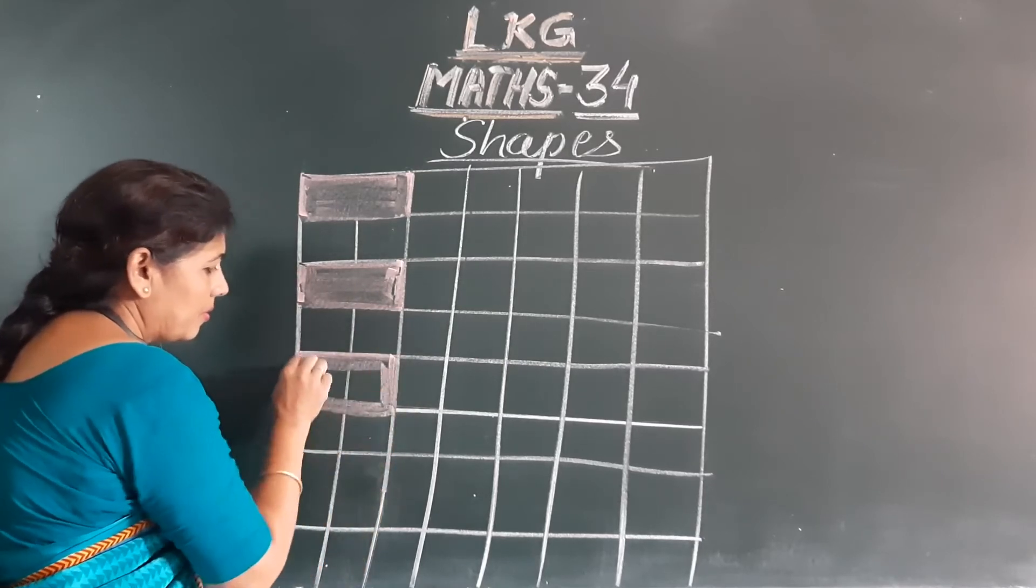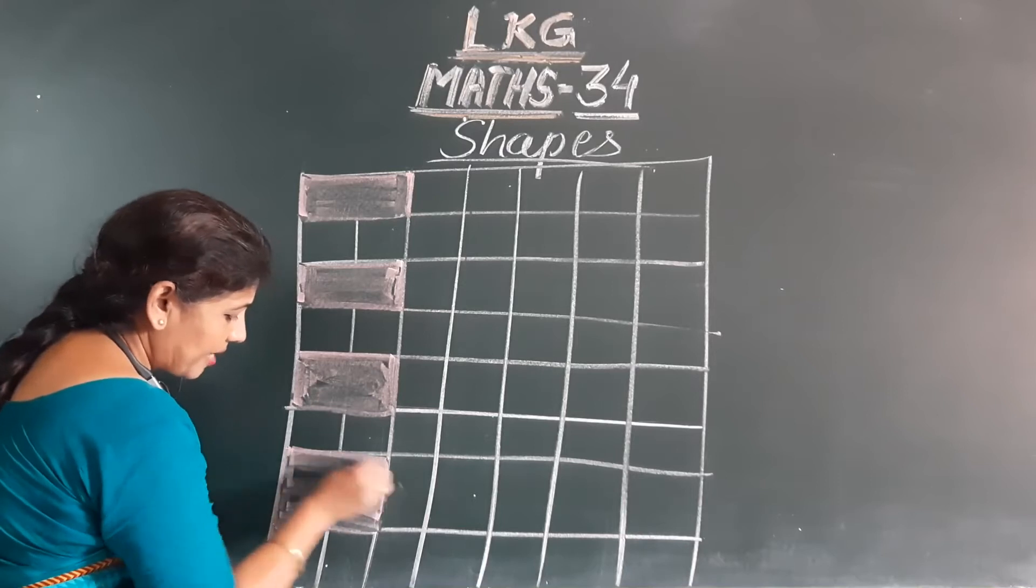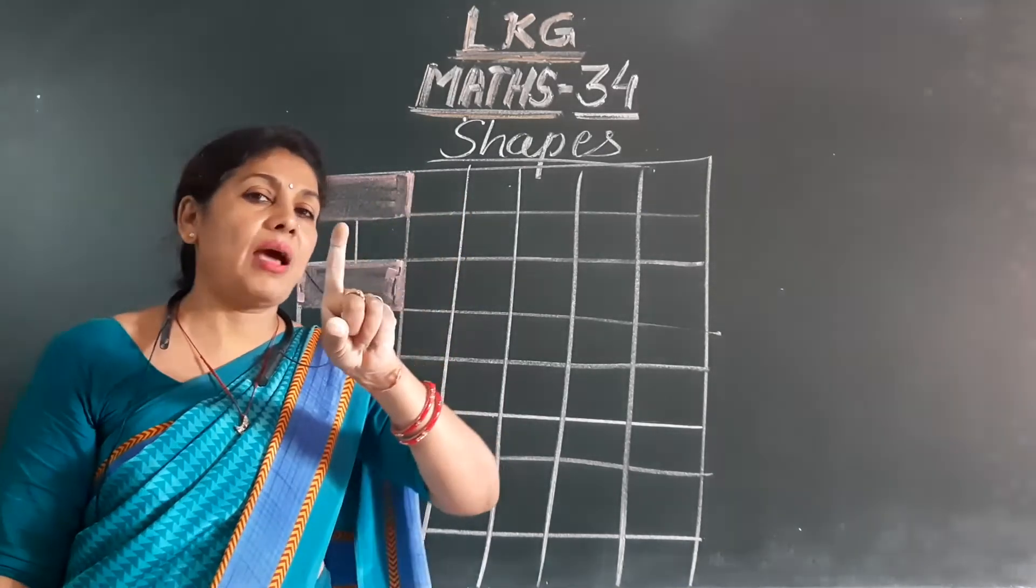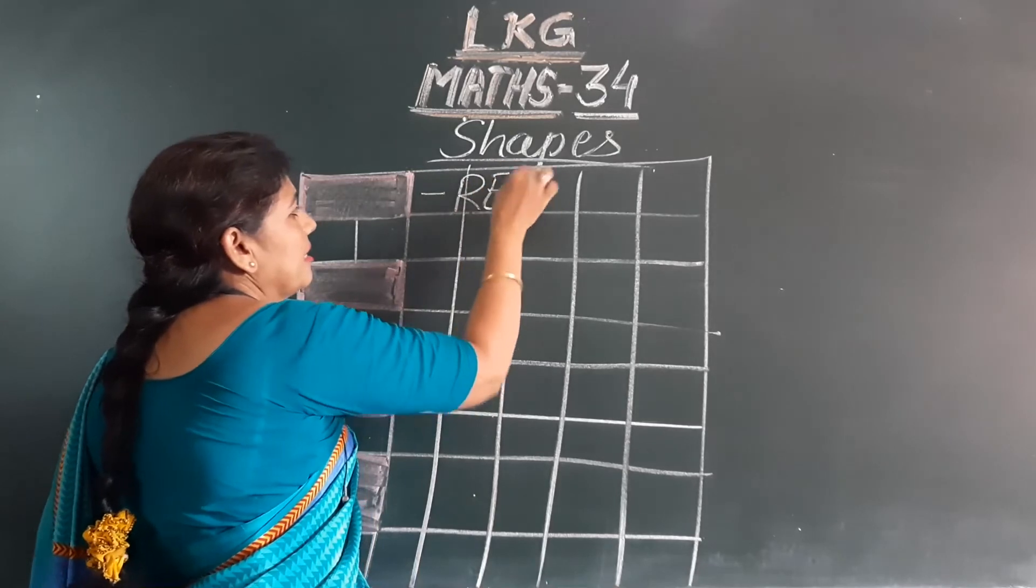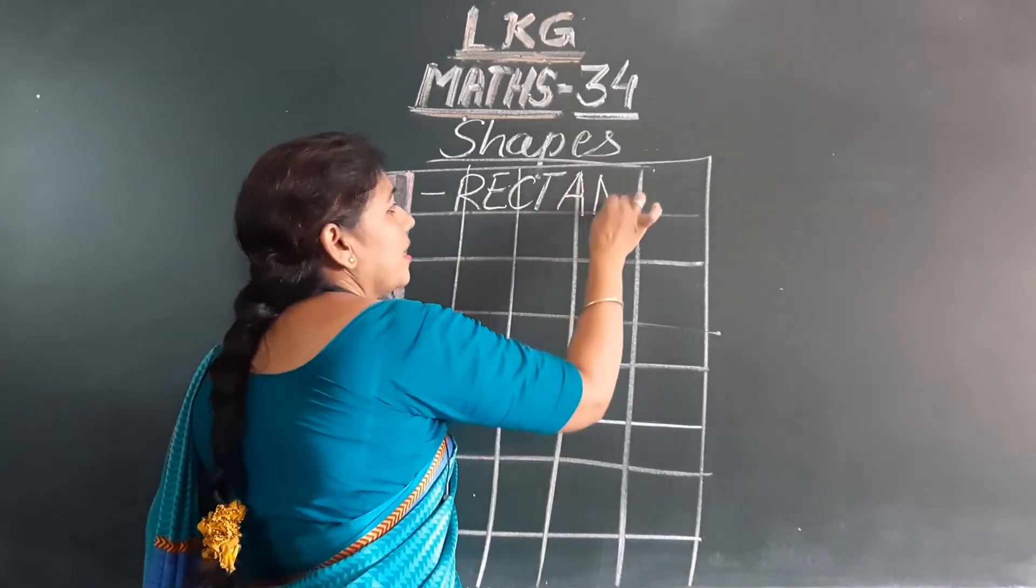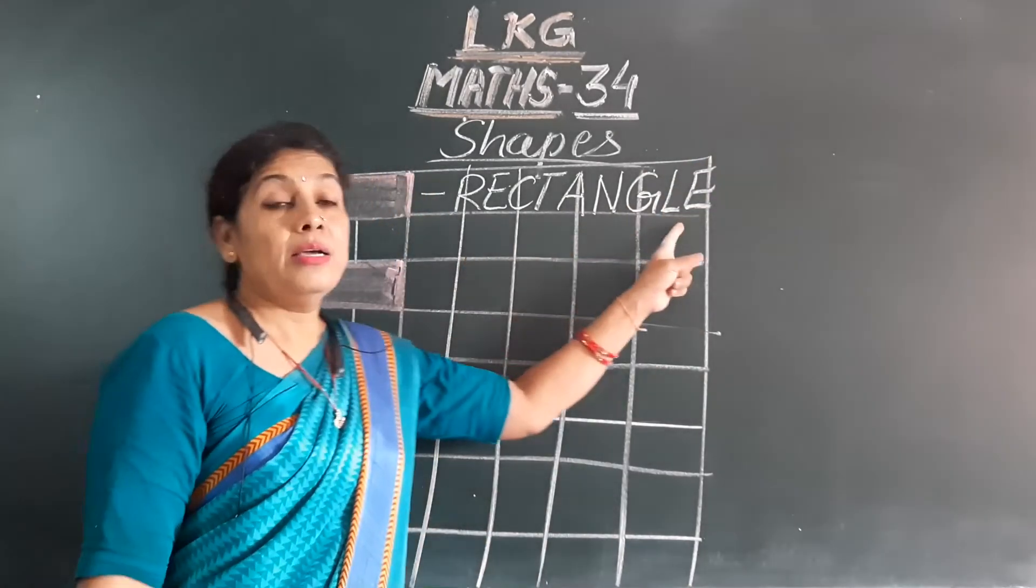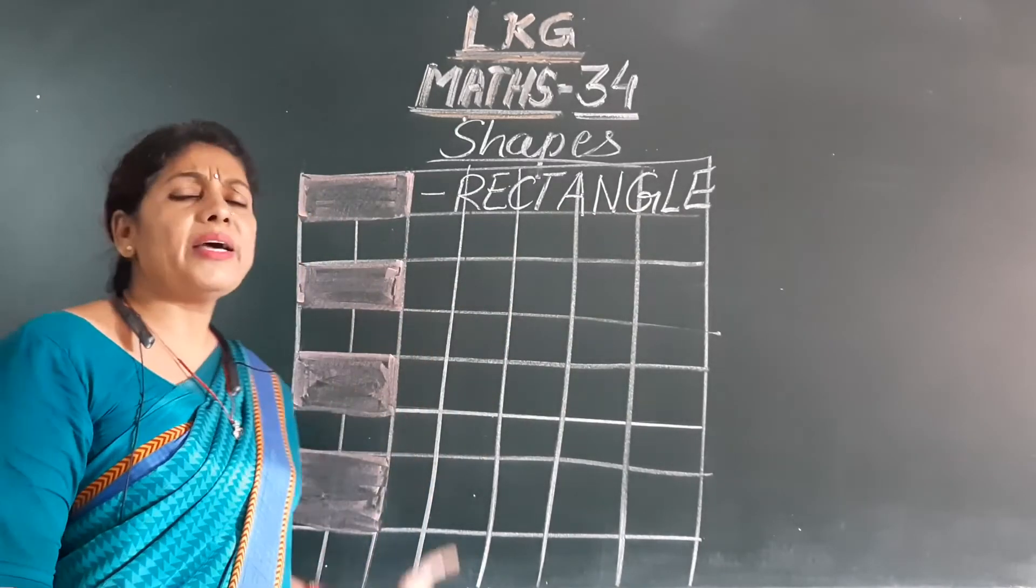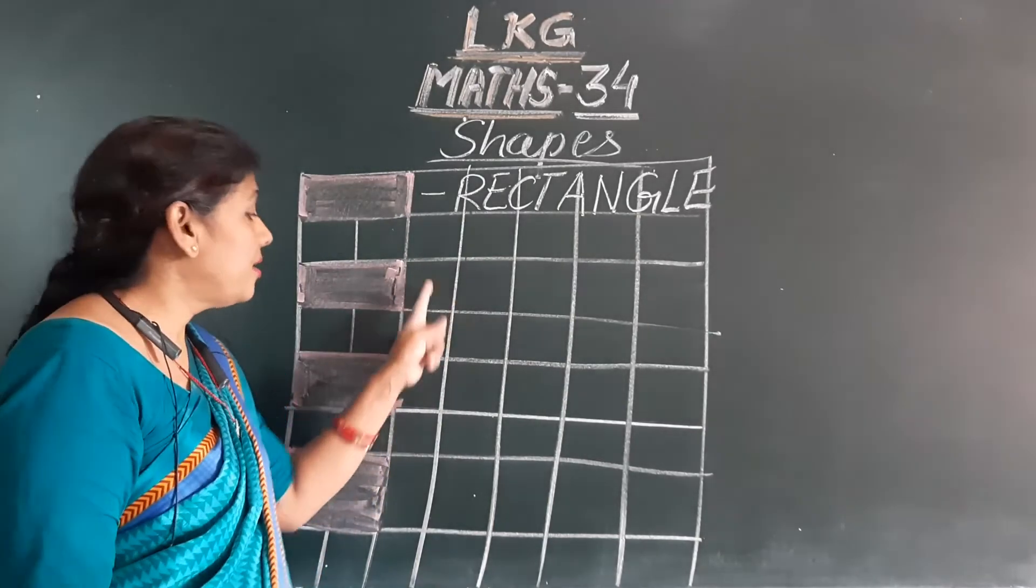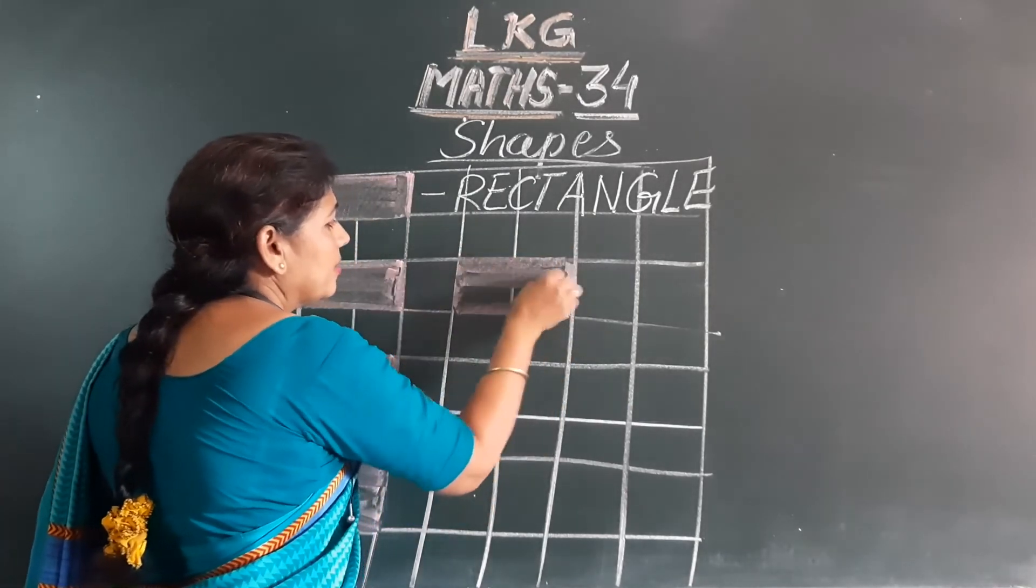This one, what do you mean? It is a rectangle. You will draw rectangles in your copy. Write the name of the rectangle only one time. Rectangle. Write it only one time and draw so many times. Draw full two pages, that is rectangle.